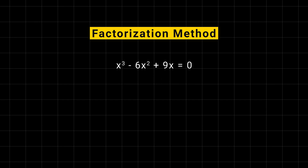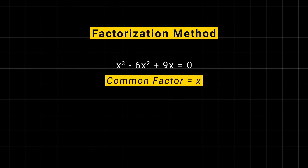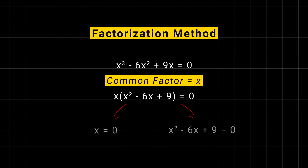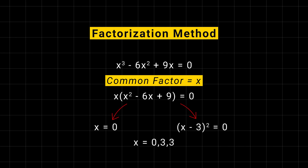Consider the cubic equation x cubed minus 6x squared plus 9x equal to 0. We can start by factoring out the common factor, which is x, giving us x times x squared minus 6x plus 9 equal to 0. And we can easily solve this quadratic equation.